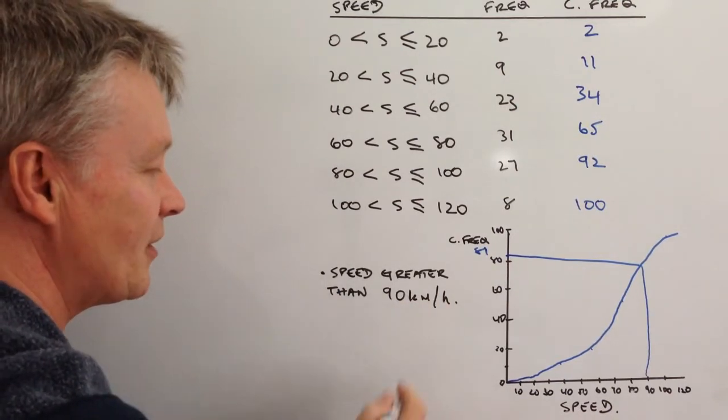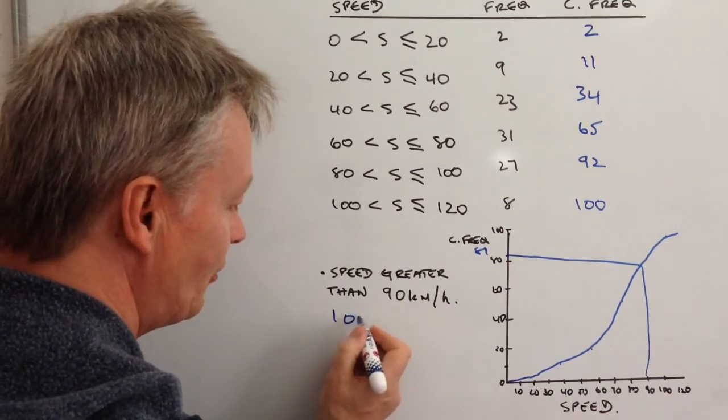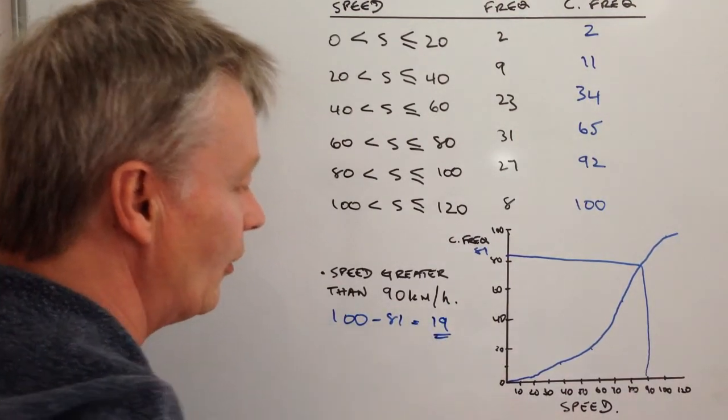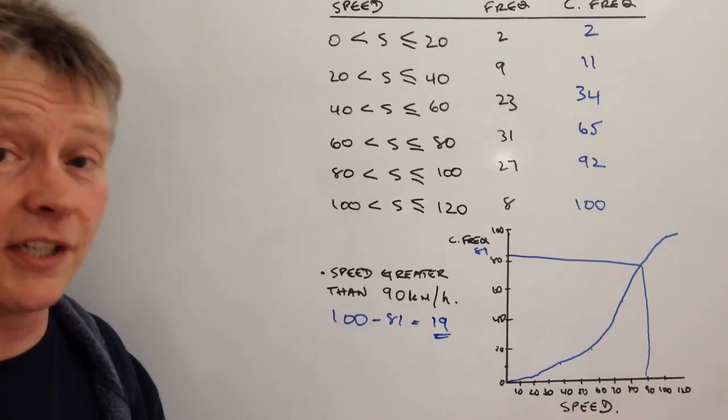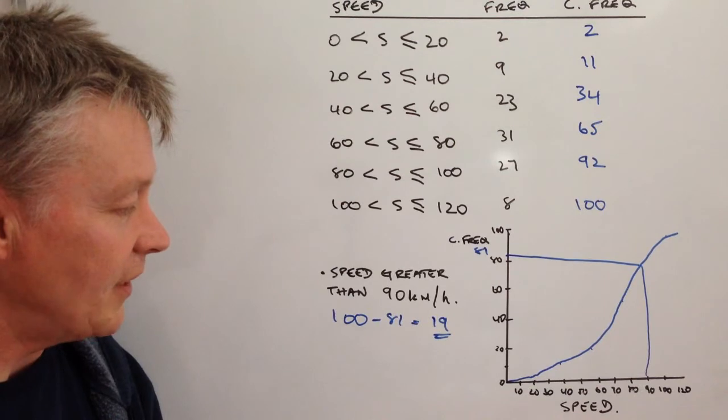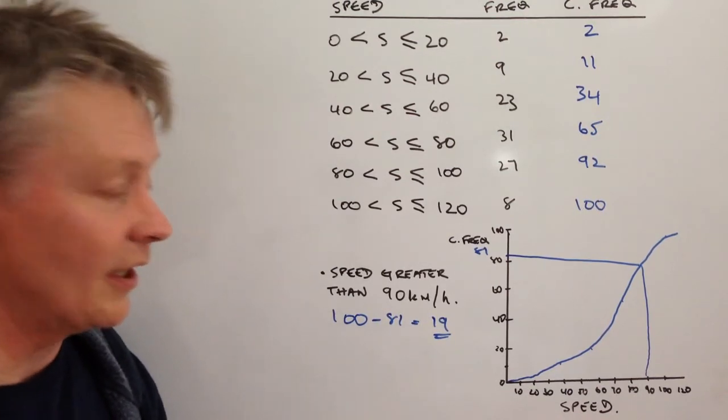So those that are greater than 90 kilometers per hour is 100 minus 81. So that's going to give me 19 lorries in total. So 19 lorries will go greater than 90 kilometers per hour.